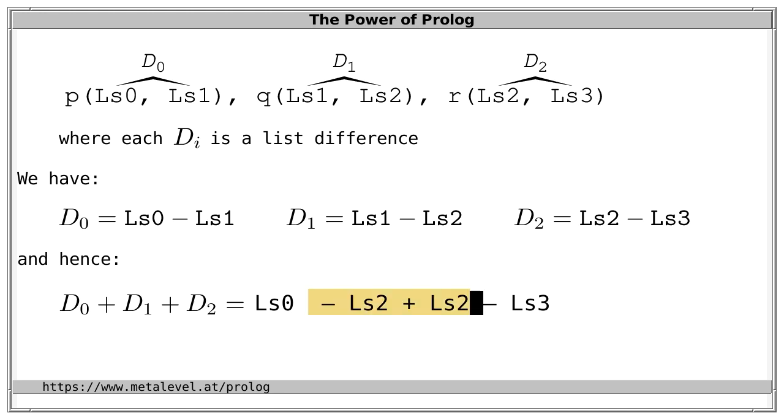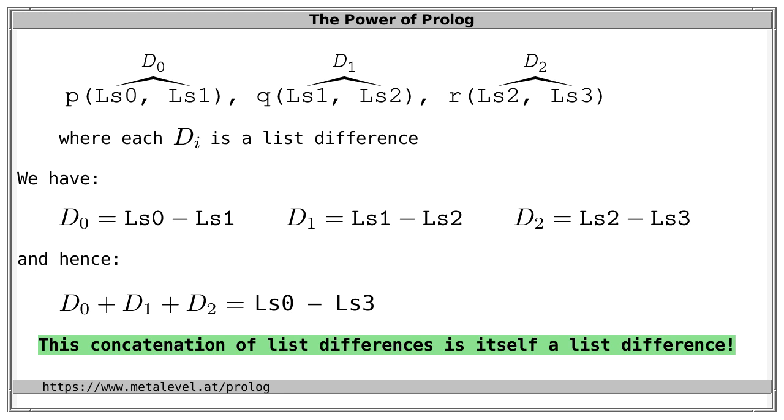So we end up with LS0 minus LS3, and that's a list difference. One key observation is that if we concatenate list differences in this way, then we obtain again a list difference.